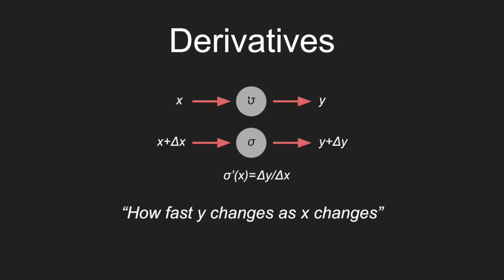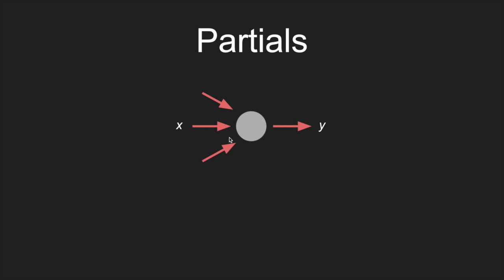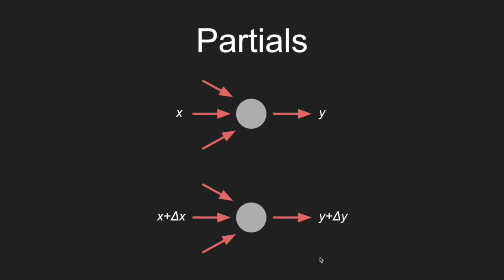One thing to note is that this unit only has one input and one output. But a neuron can take multiple inputs. What we do is just look at one of the inputs at a time. We can call one input x and one output y, and look at what happens to y if we change x a little bit. We add delta x to x and get delta y as a result. We call that the partial derivative — delta y divided by delta x. It's called a partial derivative just because there's a bunch of other arrows in the picture; the concept is the same as a regular derivative.